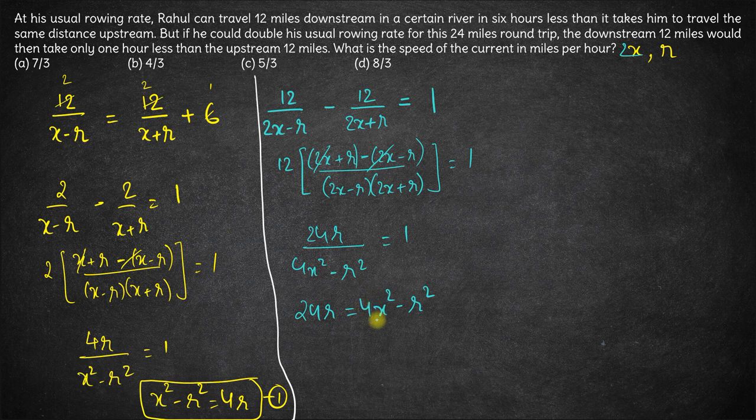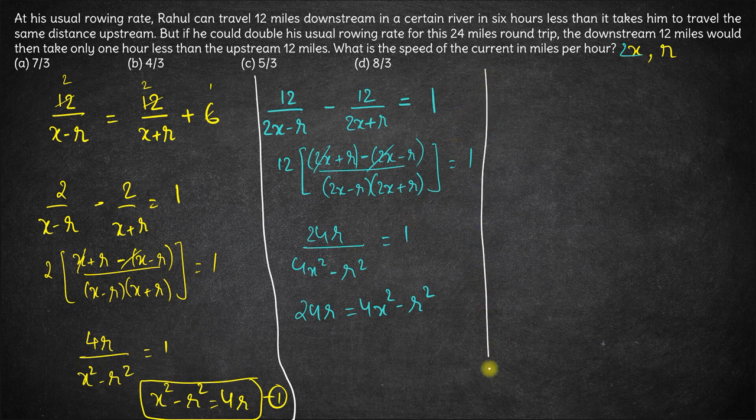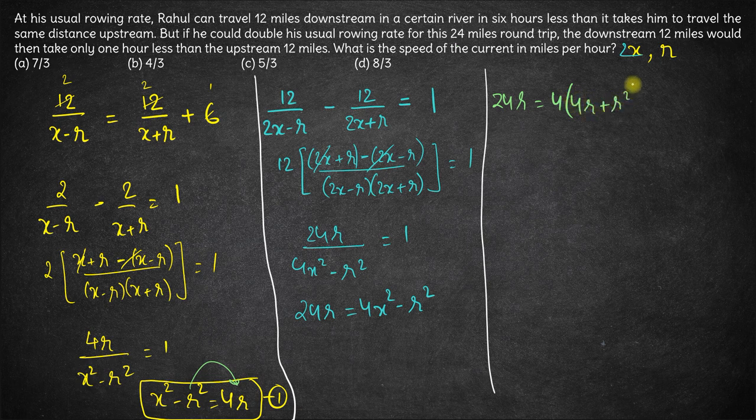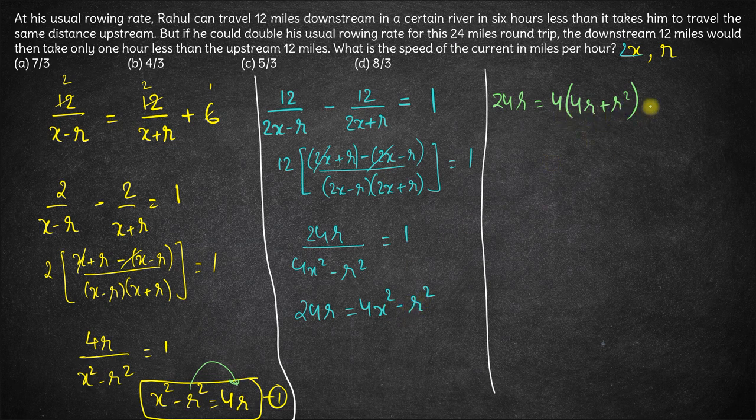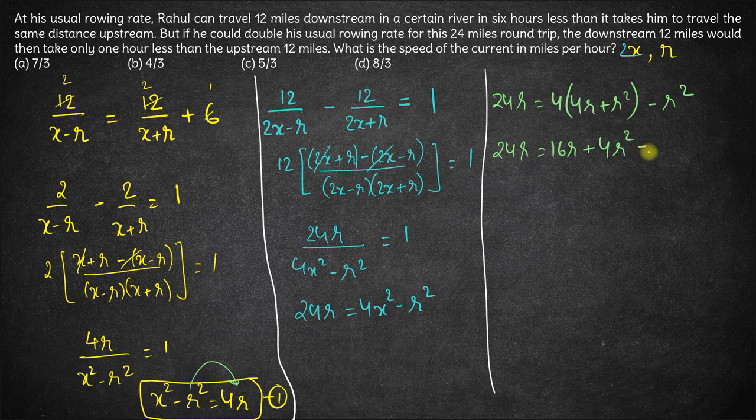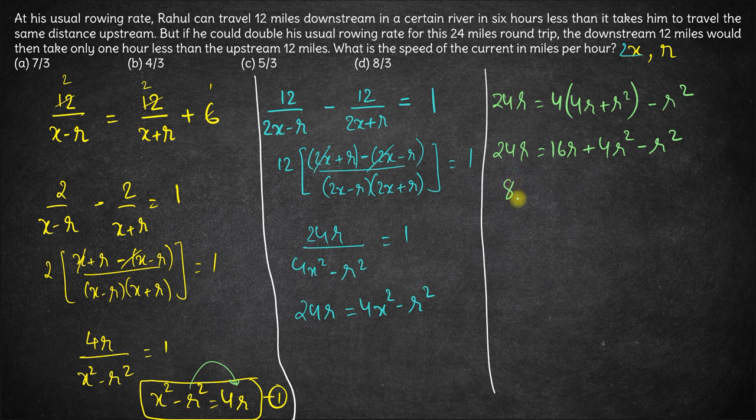Now what we can do is we can substitute x square from here over here. So from this equation we have 24r is equal to 4 times x square. Now what will be the value of x square? x square is 4r plus r square. So instead of 4x square we have all this thing minus r square. So we get 24r is equal to 4 into 4 is 16r plus 4r square minus r square. So 24r minus 16r is 8r, which is equal to 4r square minus r square is 3r square.